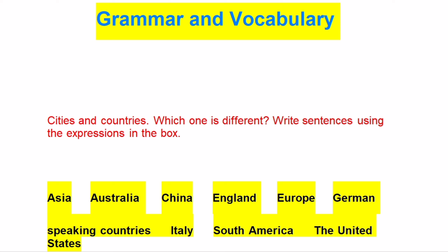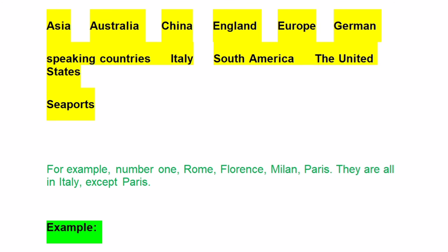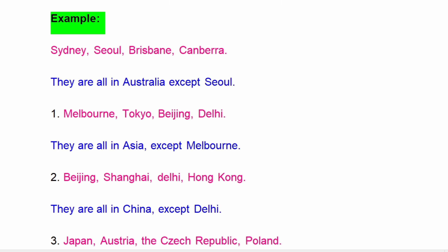Now let's move to grammar and vocabulary — cities and countries. Write sentences using the expressions in the box. For example: Sydney, Seoul, Brisbane, Canberra — they are all in Australia, except Seoul.